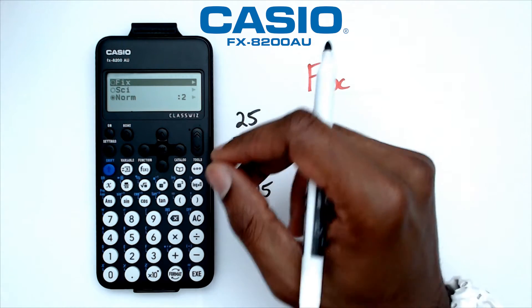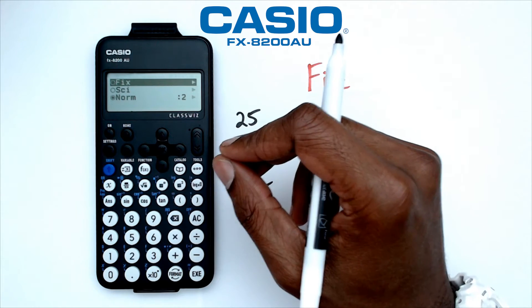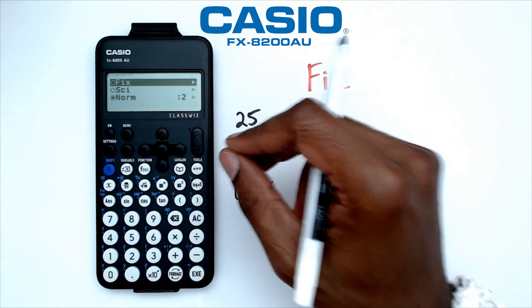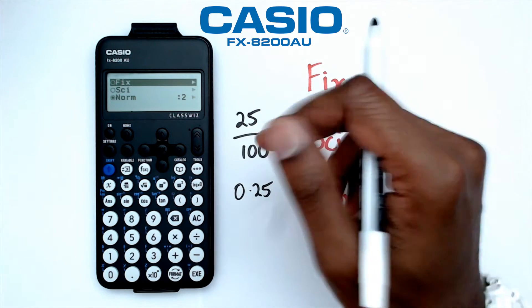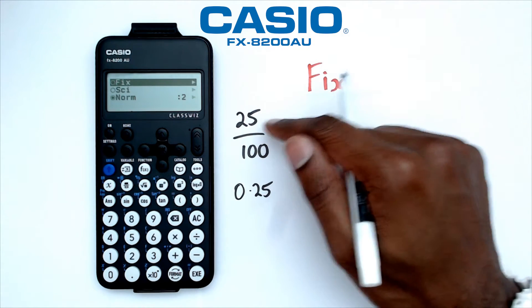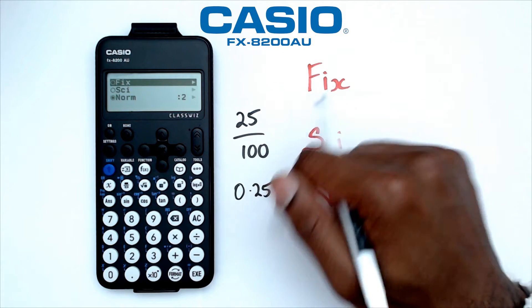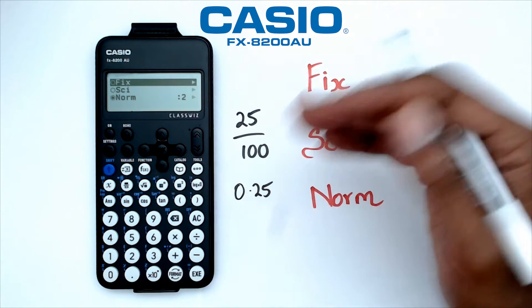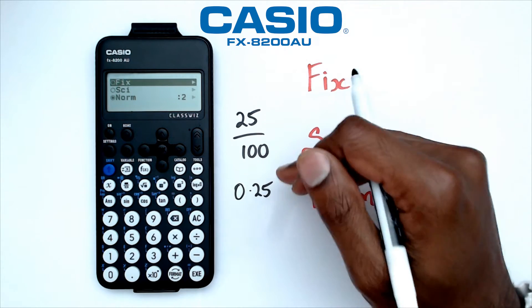This is the standard calculator default. So that means when you do 25 over 100, the number would automatically display as a decimal.